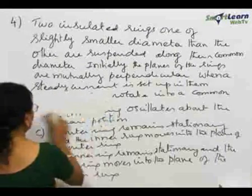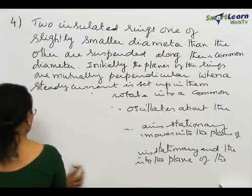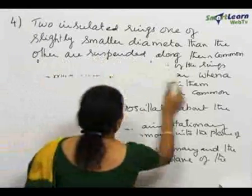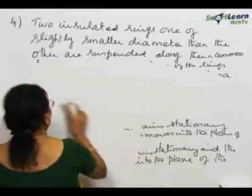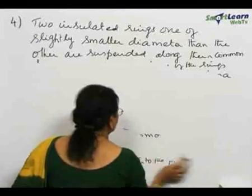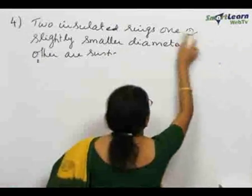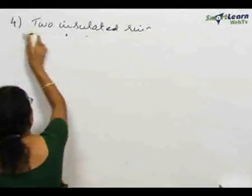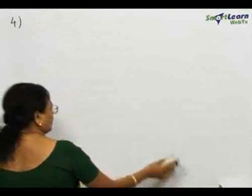We have to examine the torque on the rings, assuming ring 2 is situated in the magnetic field of ring 1, and ring 1 is situated in the magnetic field of ring 2. From this knowledge of the torque, we can predict whether the rings will rotate into a common plane, etc.